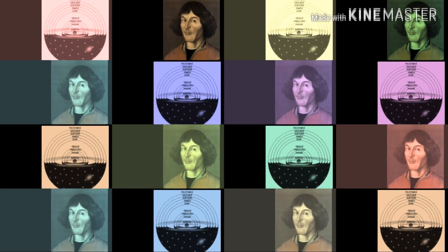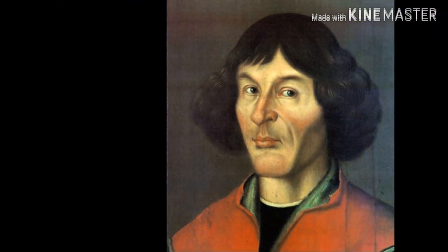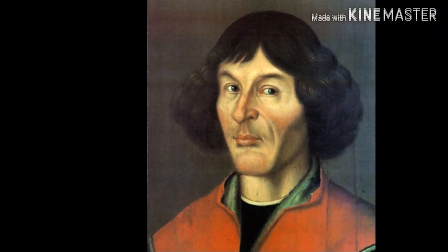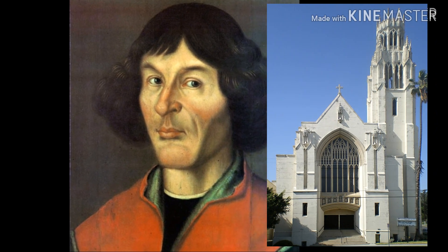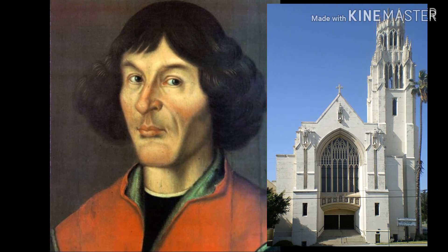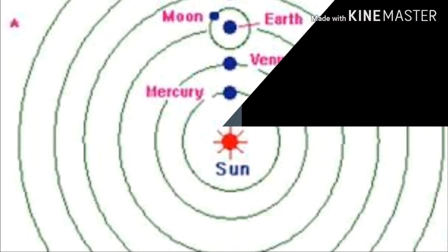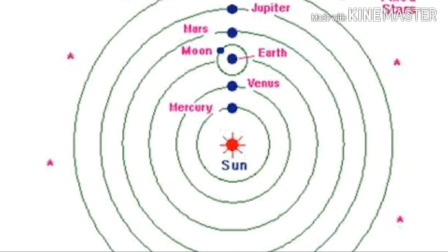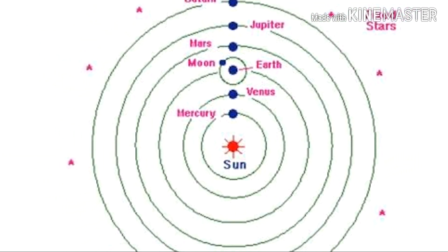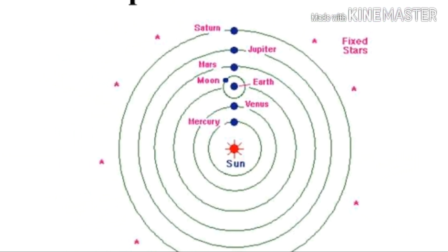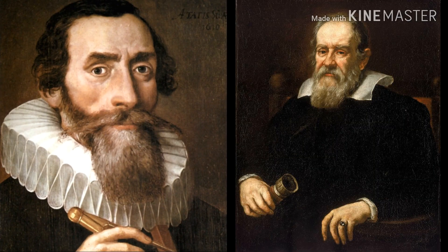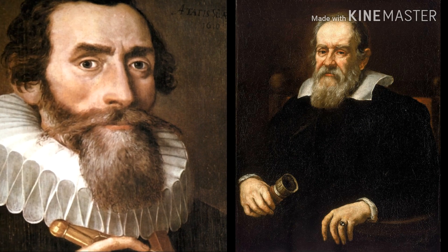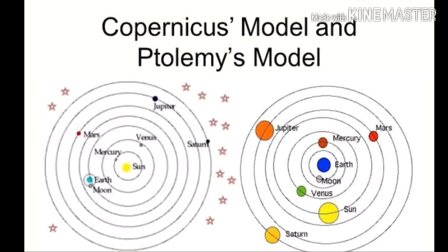A simpler model was given in 1514 by Nicholas Copernicus, but due to fear of the church, he circulated his model anonymously. In this model, the sun was at the center and the other planets revolve around it. Almost after a century, two astronomers — Kepler and Galileo Galilei — supported it publicly. In 1609, Ptolemy's theory was blown away.